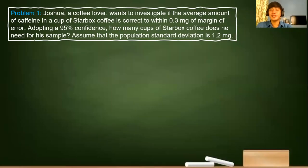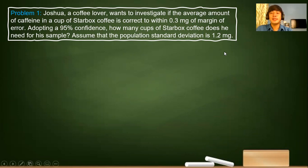Let's solve the first problem. Joshua, a coffee lover, wants to investigate if the average amount of caffeine in a cup of Starbucks coffee is correct to within 0.3 milligrams of margin of error. Joshua adopted 95% confidence level in which he wanted to determine how many cups of Starbucks coffee does he need for his sample. Let us assume that the population standard deviation is 1.2 milligrams.